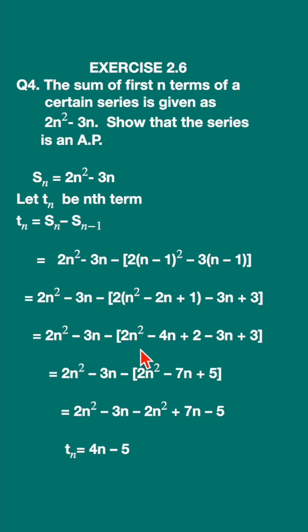Again simplify it. See, minus 4n minus 3n is minus 7n. 2 plus 3 is 5. Again when you open the bracket, this will become minus 2n square. Minus into minus is plus 7n minus 5. 2n square and minus 2n square will cancel. 7n minus 3n is 4n minus 5.